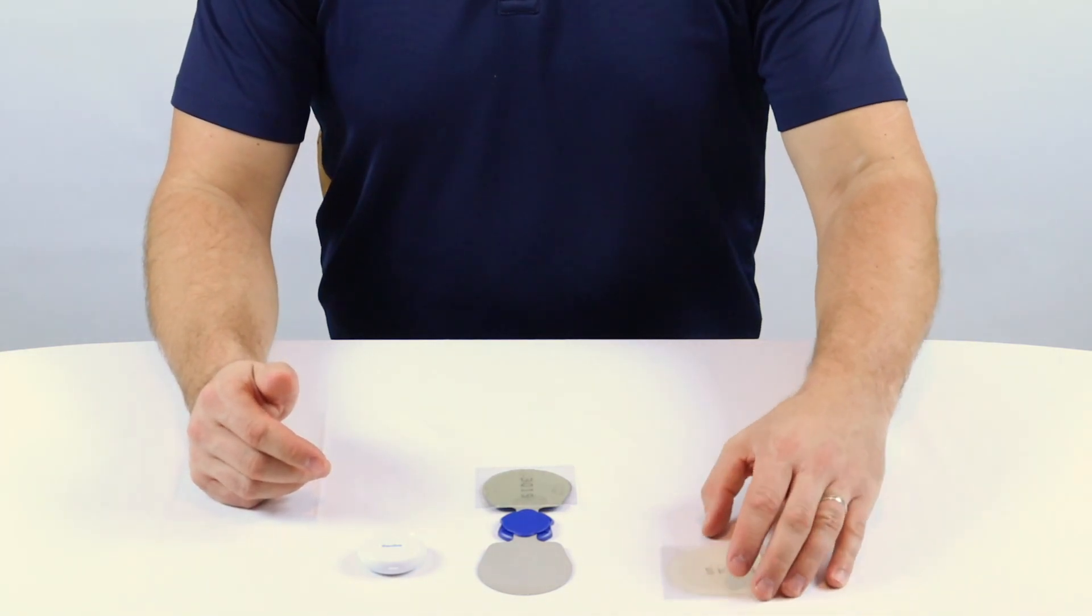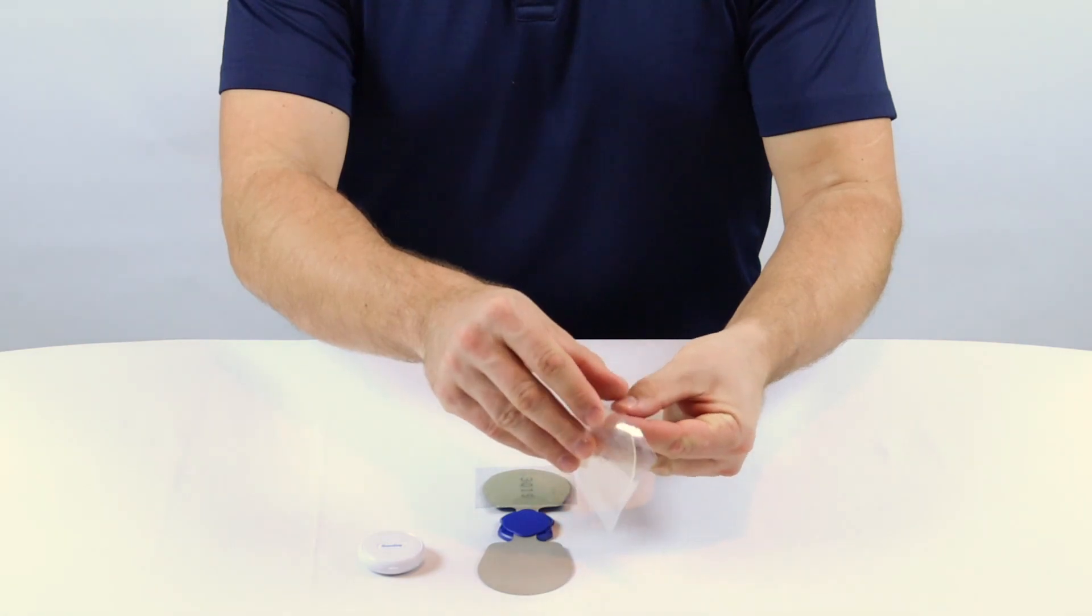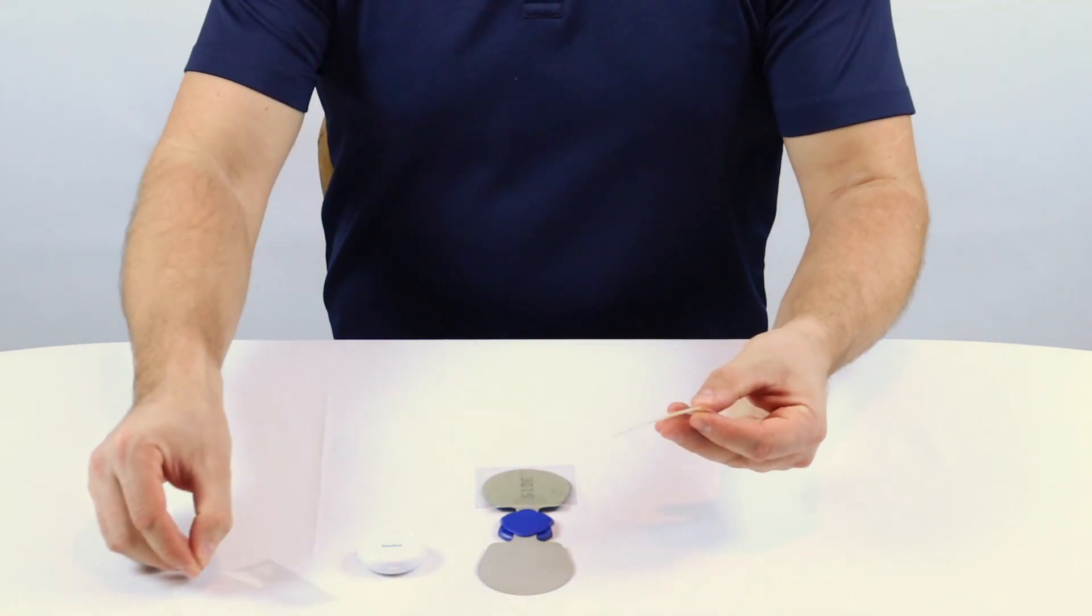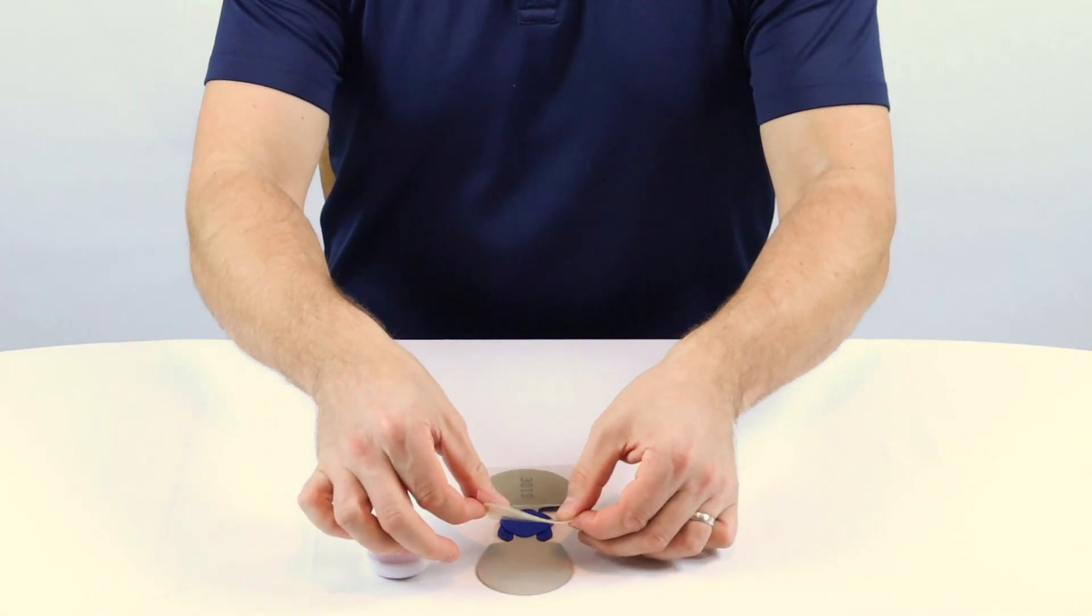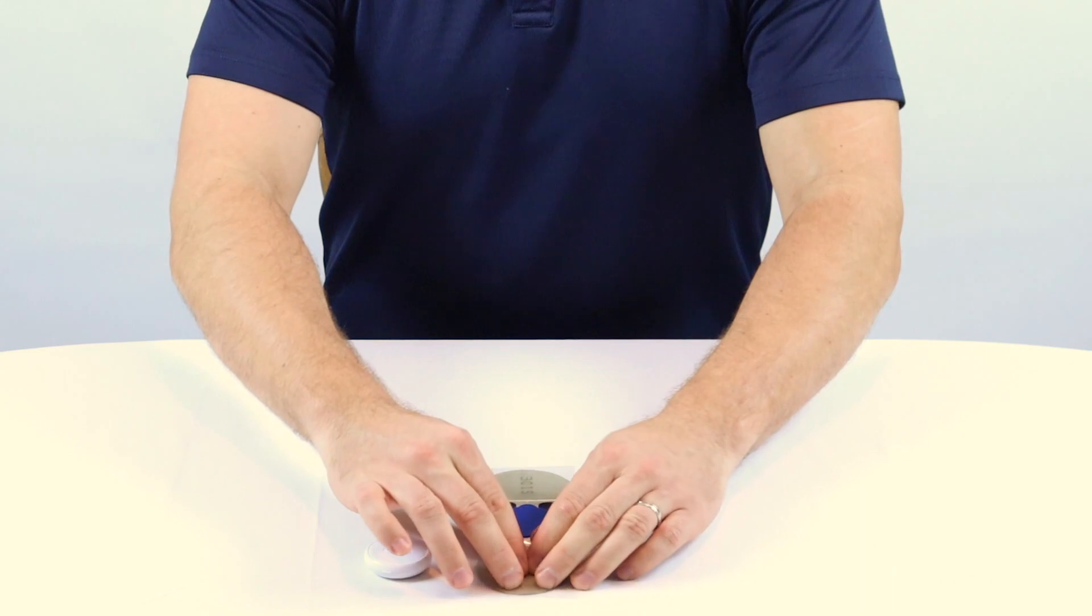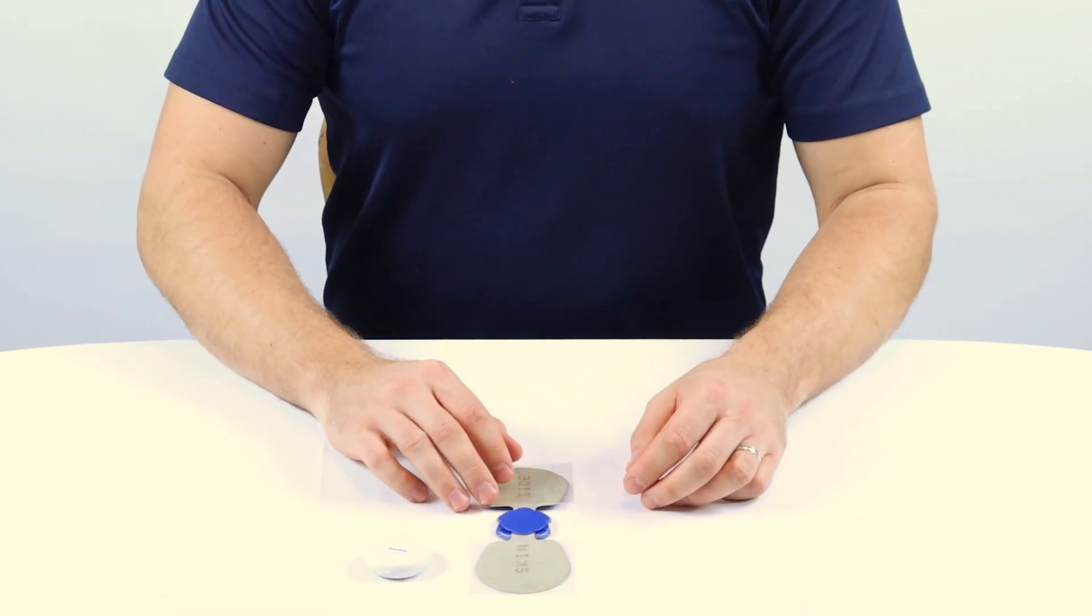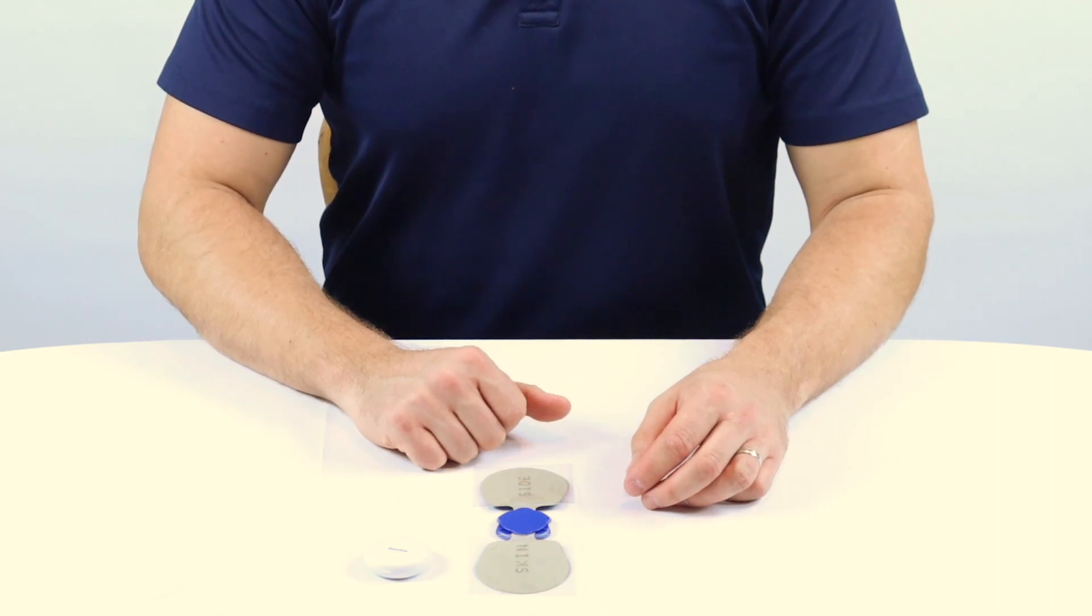Next, to place the new gel pad onto the wing, expose the side of the gel pad without writing on it, line up the edge of the gel pad with the same edge of the wing you started rolling the gel pad from, press down, and the pad is on the wing. Do these same steps to the other side and you're ready to use your new gel pads.